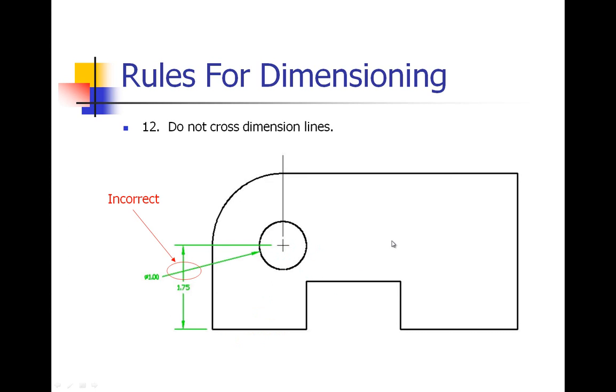Number twelve: do not cross dimension lines because it doesn't look very good and it makes it difficult to read. So rather than putting this diameter of one inch crossing this dimension line, we would want to pull that up a little ways.